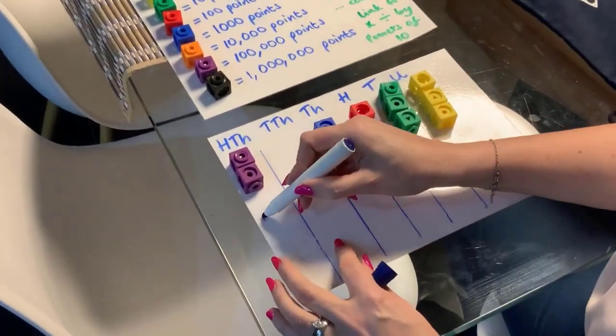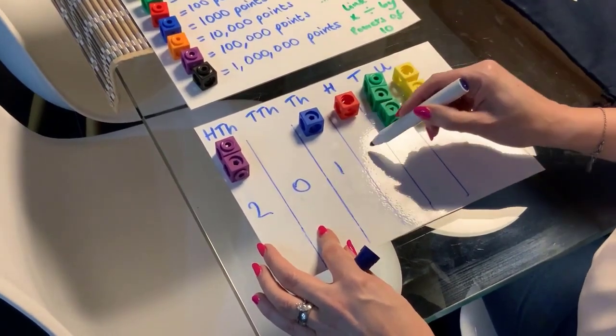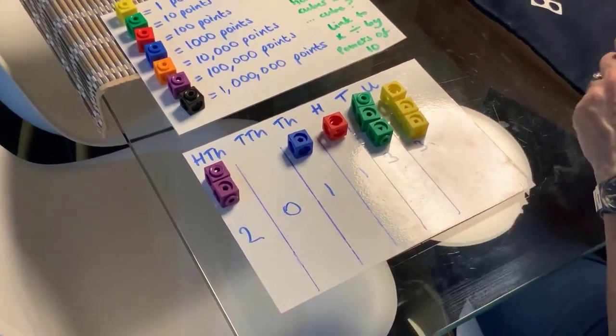Then we want the children to record it. So we're getting two hundred thousands, no tens of thousands, one thousand, one hundred and thirty-three. So we get the children to repeat that.